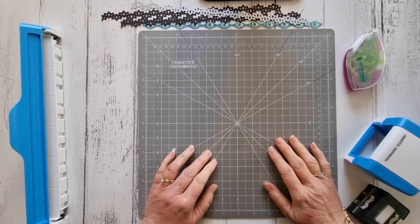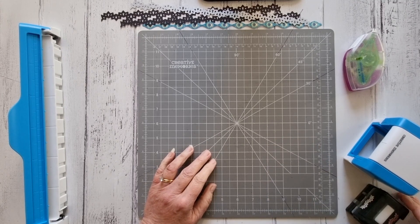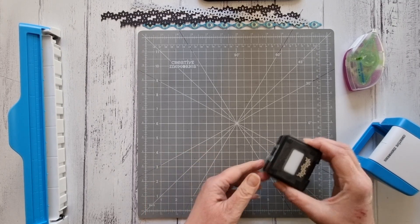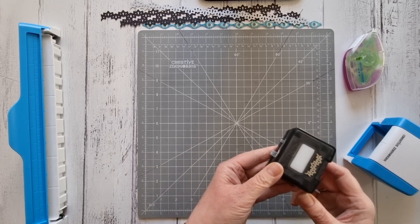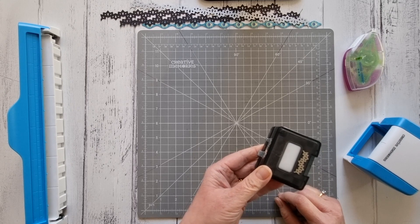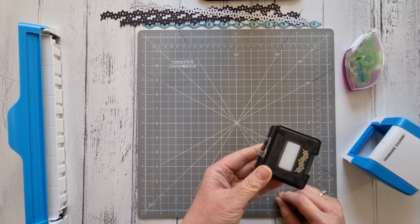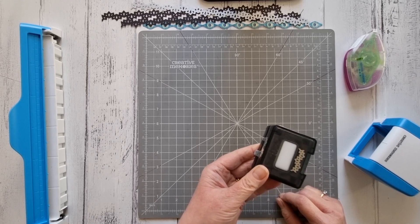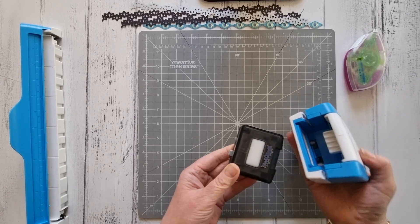I'd like to show you how I made this fun border using the gemstones border maker cartridge with the border maker system. If you haven't used one before, they're fairly easy to use. You take your housing and you slide your cartridge in until it clicks.